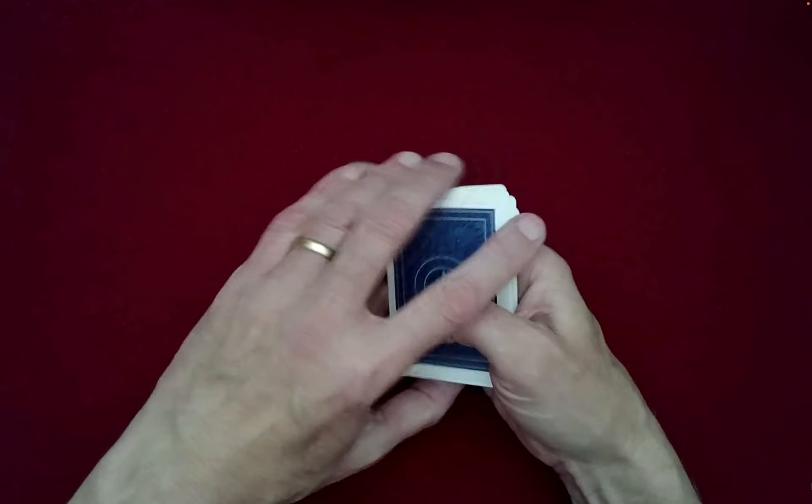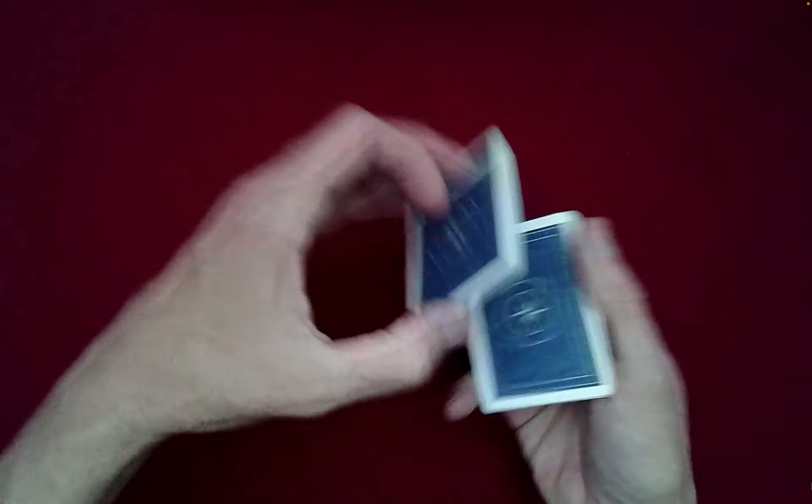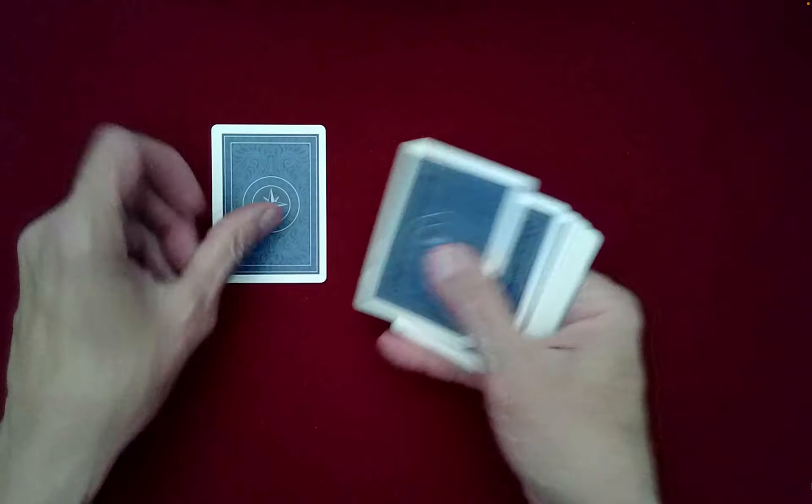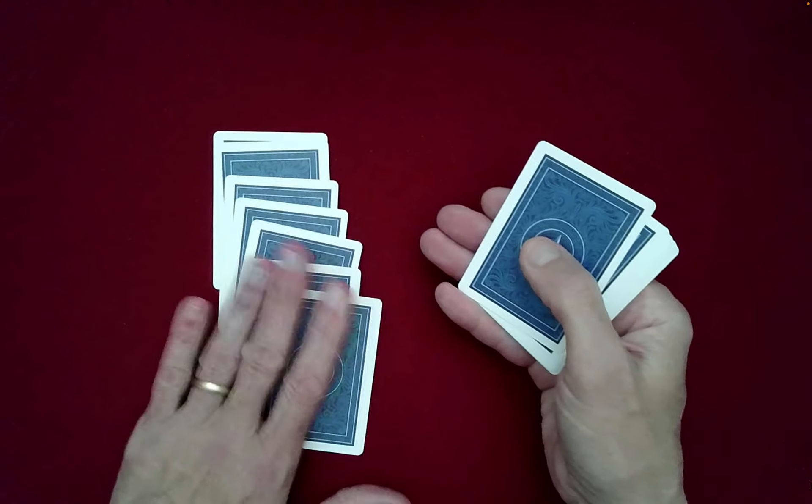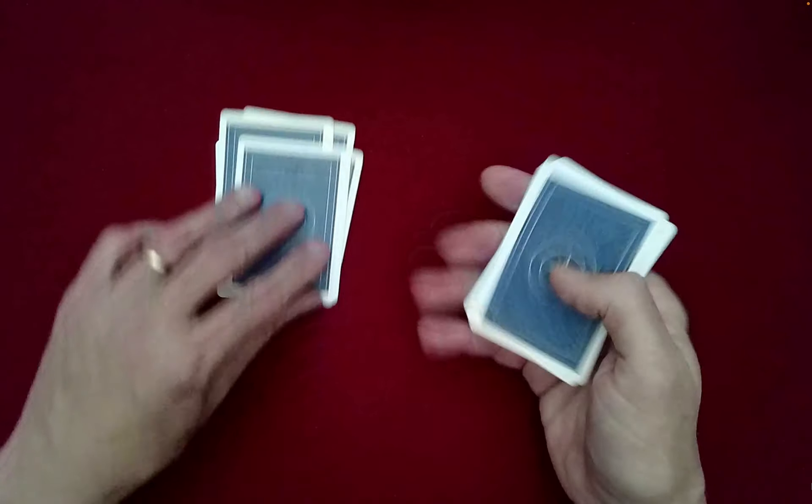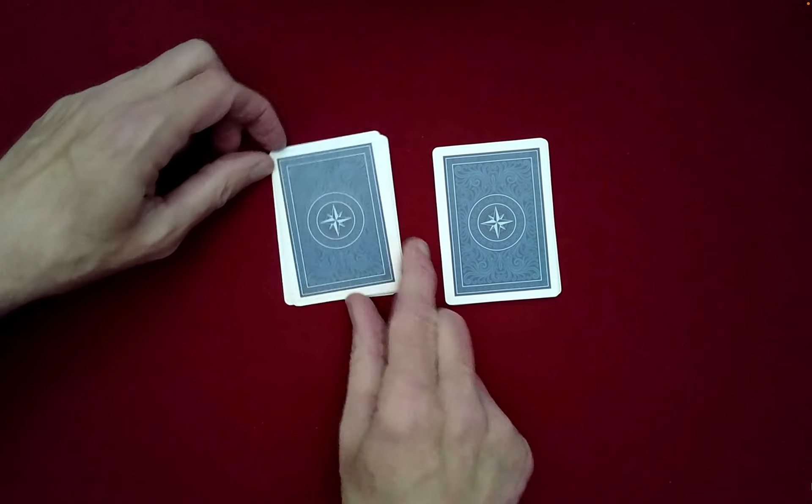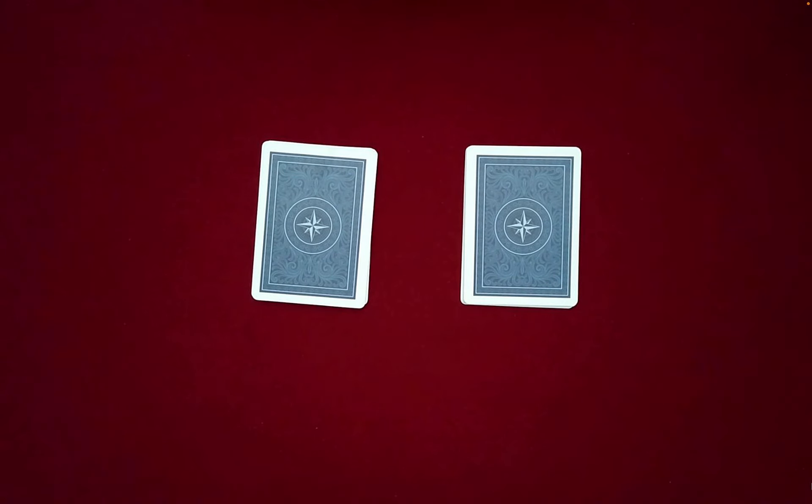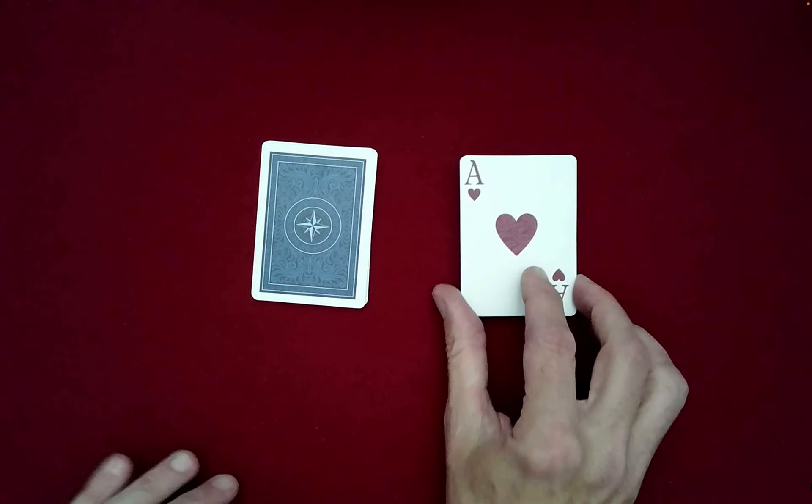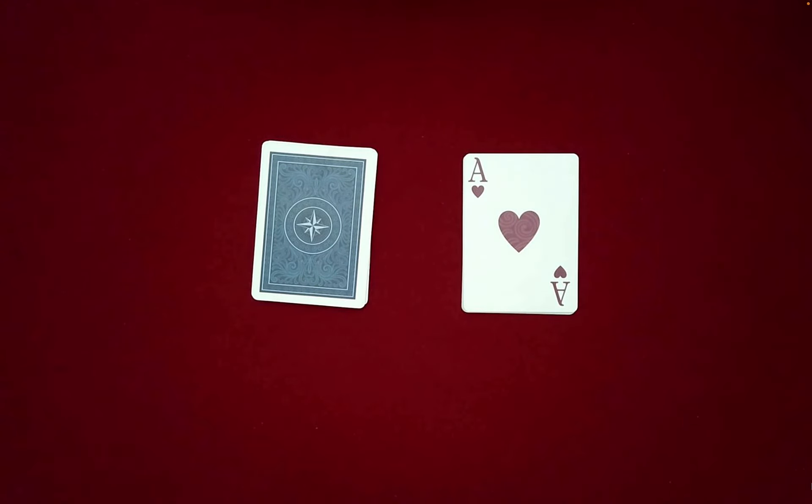Now what you need to do is deal out seven cards into one pile. I wasn't counting... okay, seven. Then the spectator gets to freely choose which pile to flip face up. Maybe they want this one face up. So the Ace of Hearts is essentially our challenge card.